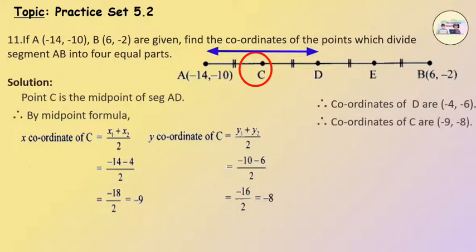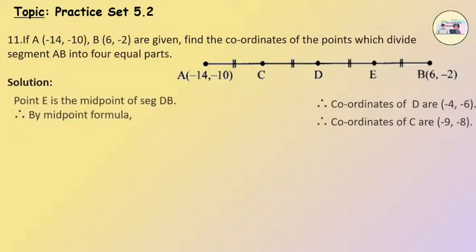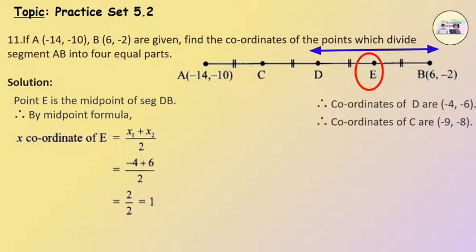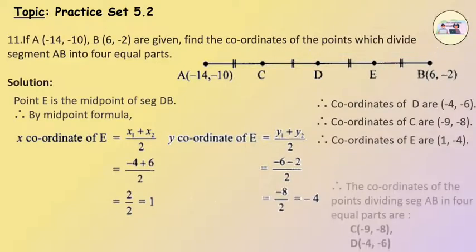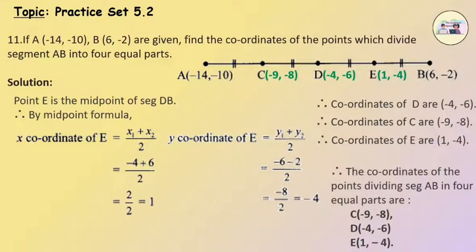Therefore, the coordinates of C are (minus 9, minus 8). Point E is the midpoint of segment DB. By the midpoint formula, the x-coordinate of E equals minus 4 plus 6 upon 2, which equals 2 upon 2, which equals 1. The y-coordinate of E equals minus 6 minus 2 upon 2, which equals minus 8 upon 2, which equals minus 4. Therefore, the coordinates of E are (1, minus 4). The coordinates of the points dividing segment AB into 4 equal parts are C(minus 9, minus 8), D(minus 4, minus 6) and E(1, minus 4).